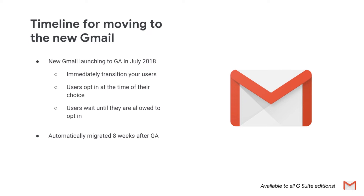Users who haven't yet been transitioned to the new Gmail will be automatically migrated to the new experience approximately eight weeks after the GA announcement, with the option to opt out of the new Gmail for an additional four weeks. Approximately 12 weeks after the GA announcement in July, users who've opted out of the new Gmail will be automatically migrated to the new experience. Check out the Help Center for more info on the new Gmail transition plan in July.